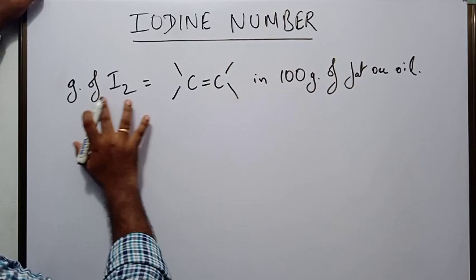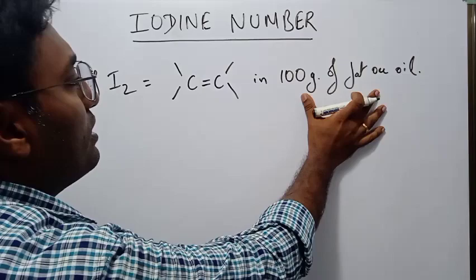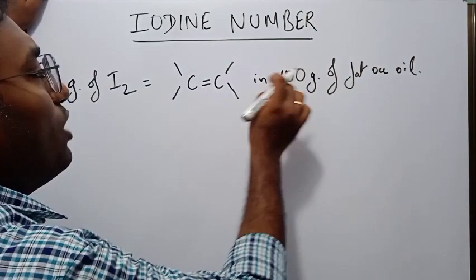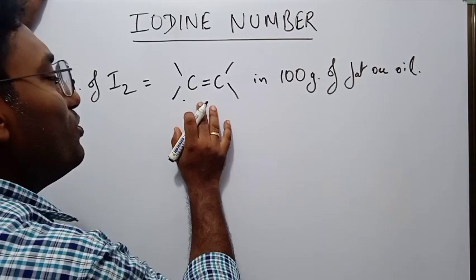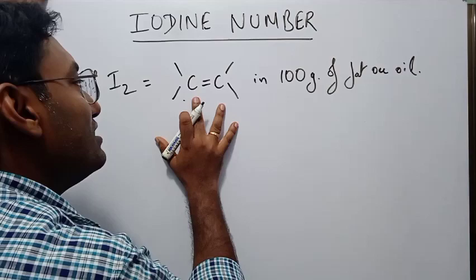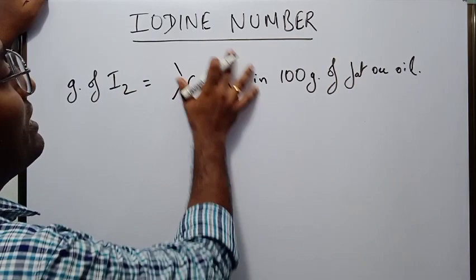What is iodine number? It is the grams of iodine that would react with carbon-carbon double bonds in 100 grams of fat or oil. Suppose you are taking a sample of fat or oil — how many carbon-carbon double bonds are there? How would you know how many carbon-carbon double bonds are there in your sample of fat? By reacting it with iodine.